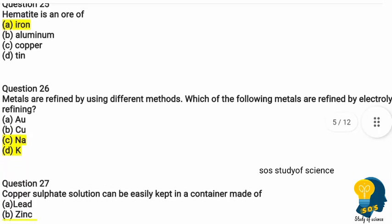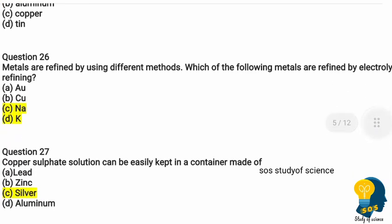Question twenty-six: metals are refined by using different methods. Which of the following metals are refined by electrolytic refining? Options are gold, copper, sodium, and potassium. Sodium and potassium are refined through electrolytic refining because they are highly reactive metals.